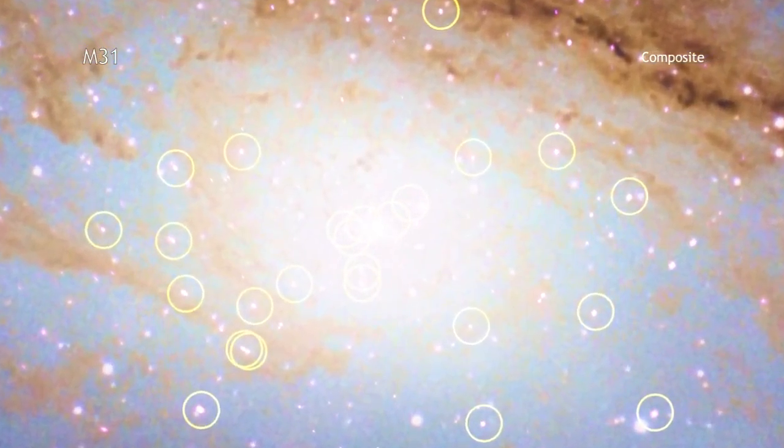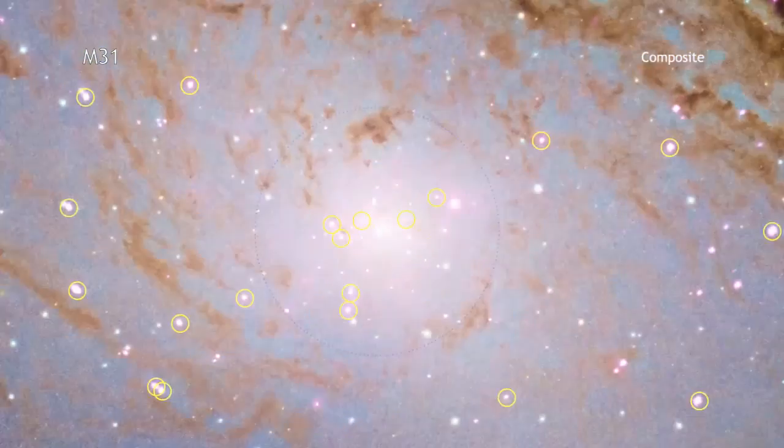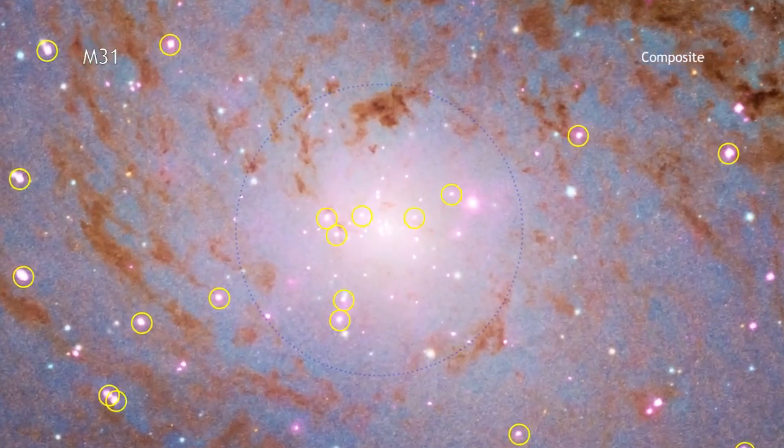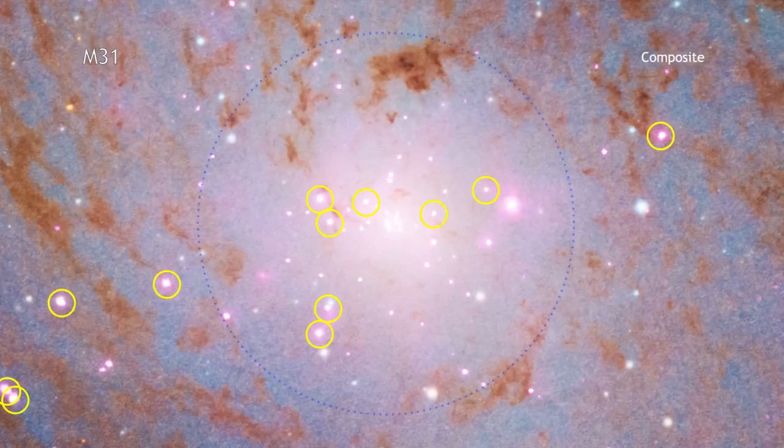Falling into the stellar mass category, these black holes form when the most massive stars collapse. The result is a black hole that typically has between 5 and 10 times the mass of the Sun.